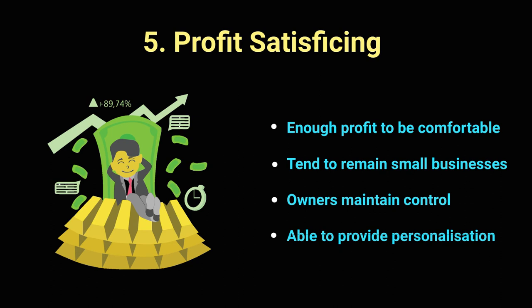Number five is profit satisficing — do not confuse this with 'satisfying.' When you hear this objective, think of the words contentment, happy, satisfied, comfortable. Profit satisficing is the objective where the owner says: I dedicate a certain number of hours a day, I make a certain number of products, that's the maximum I'm willing to produce. The business sets itself a limit on how it works and what it does.